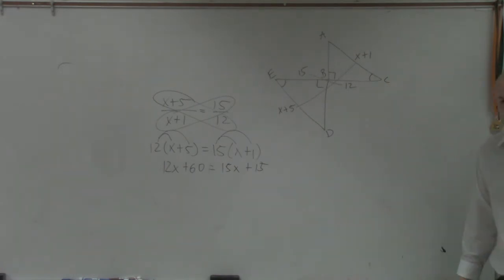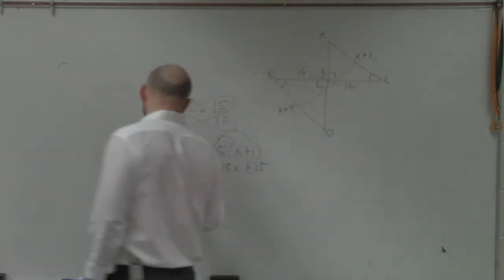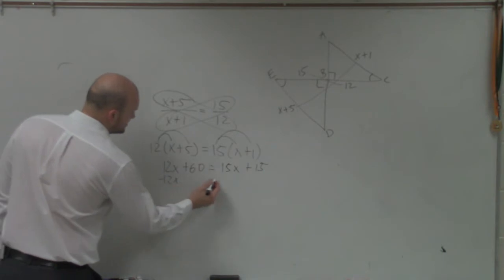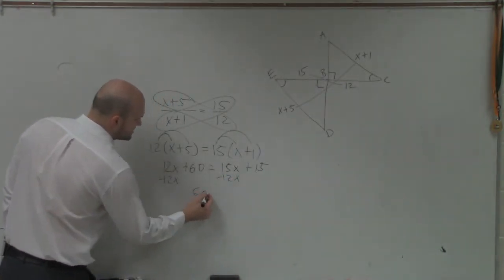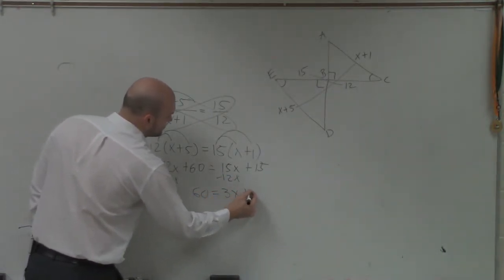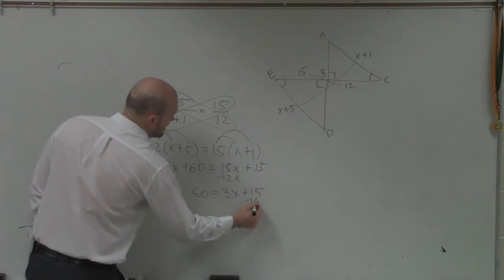Now, I just simply need to solve, right? So I get the variables on the same side. So I subtracted 12x on both sides. So I have 60 equals 3x plus 15. Subtract 15.